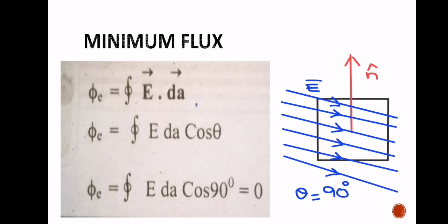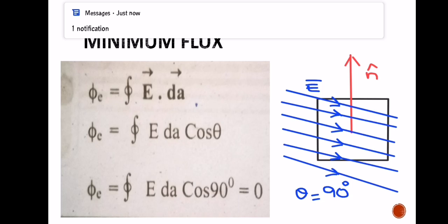For minimum flux, the surface is held parallel to the electric lines of force. The normal is directed perpendicular to the surface, so the angle between the normal to the surface and the electric field lines is 90 degrees. Therefore, phi E = closed integral E dA cos(90°), and since cos(90°) = 0, the flux through that surface is phi E = 0.